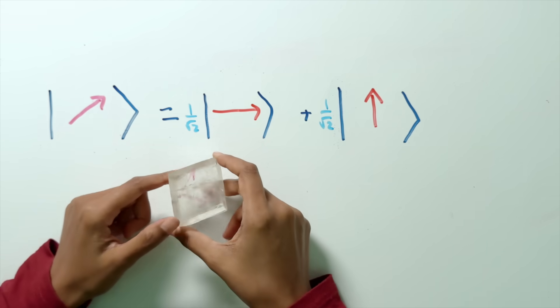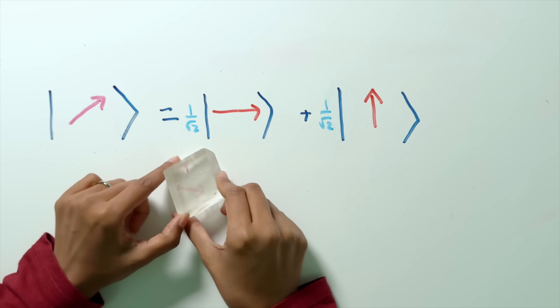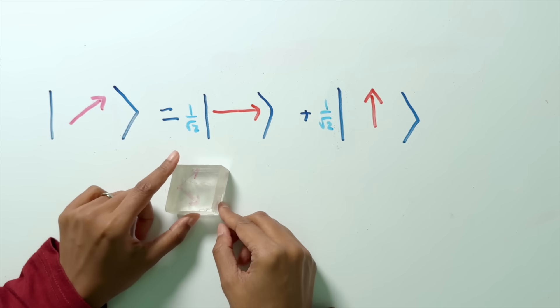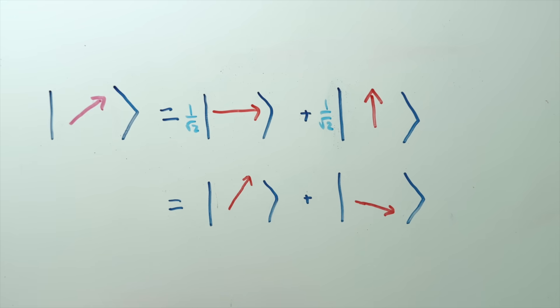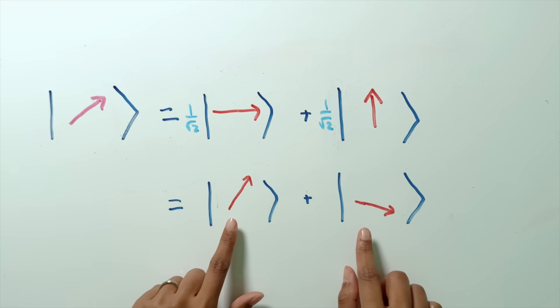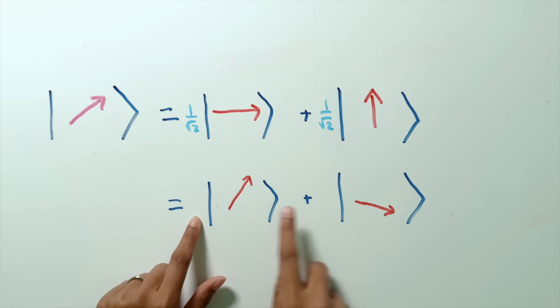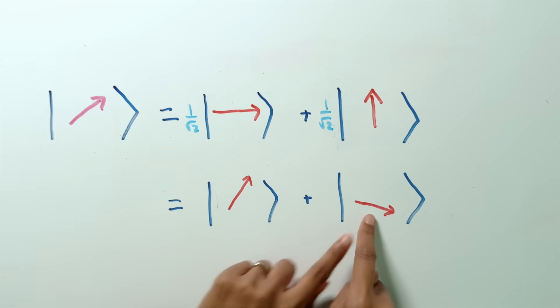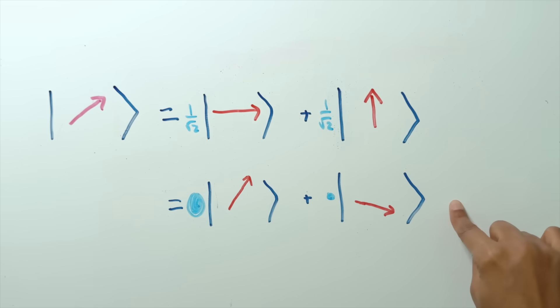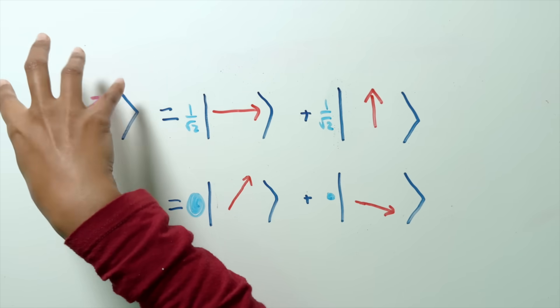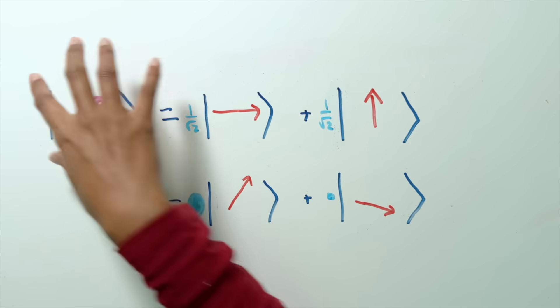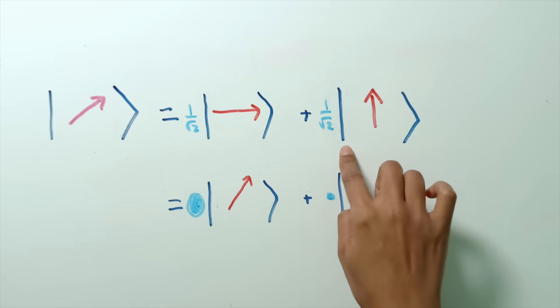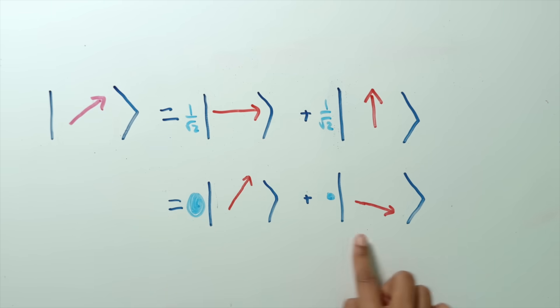But what if we chose to measure this light in some other direction? Instead of horizontal and vertical, let's say we rotated it. Now we have to write that same light in terms of two other options and figure out what the coefficients are going to be. One coefficient should be pretty big because it's pretty much the same direction, but the other should be quite small. This is called a change of basis — we've just changed how we look at this same light. And there's never anything special about which direction you choose to do measurements in.